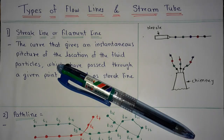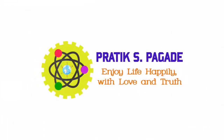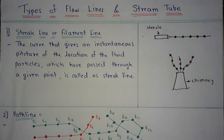Hello friends, welcome to my channel. In this video I am going to explain types of flow lines and stream tube. There are mainly three types of flow lines: first is streak line or filament line, second is path line, and third is streamline.